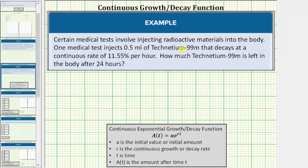Certain medical tests involve injecting radioactive materials into the body. One medical test injects 0.5 milliliters of technetium-99m that decays at a continuous rate of 11.55% per hour. How much technetium-99m is left in the body after 24 hours?